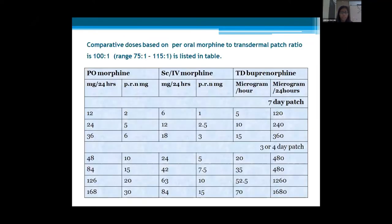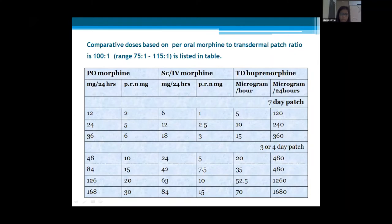The dose comparison table shows oral or subcutaneous/IV morphine conversions to buprenorphine patches. When a patient requires 12 mg morphine per 24 hours, use a 5 mcg/hr patch; 24 mg/24 hours corresponds to 10 mcg/hr; 36 mg/24 hours corresponds to 15 mcg/hr; and 48 mg/24 hours corresponds to 20 mcg/hr when patches of that strength are available.